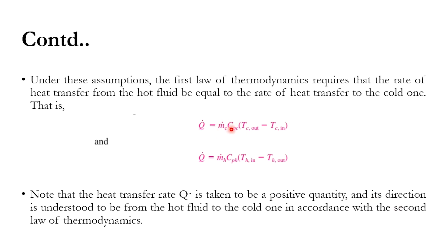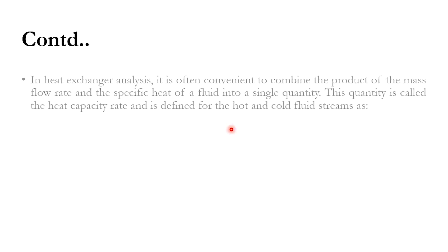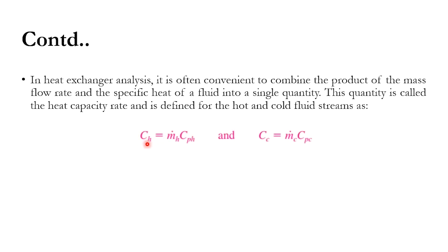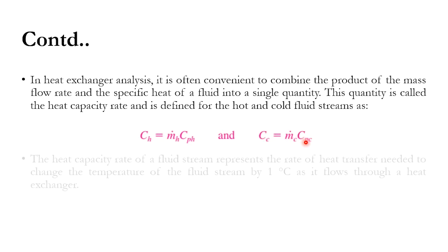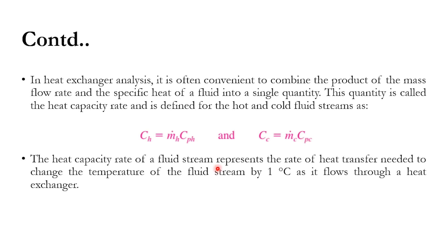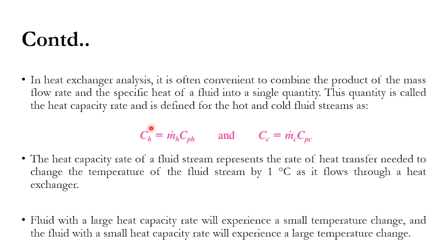It is convenient to combine ṁ and Cp into the heat capacity flow rate, denoted as capital C. So C_h = ṁ_h · Cp_h and C_c = ṁ_c · Cp_c. The heat capacity rate represents the rate of heat transfer needed to raise the temperature of a fluid stream by one degree. If this value is higher, it means the mass flow rate is higher, and a higher mass flow rate results in a smaller temperature change.